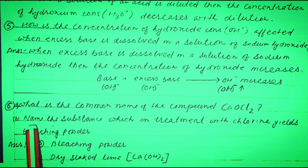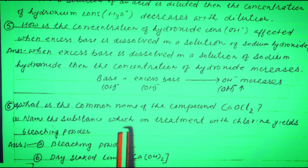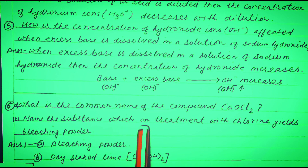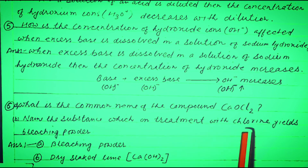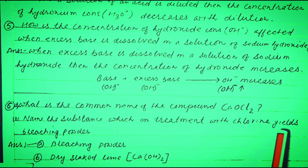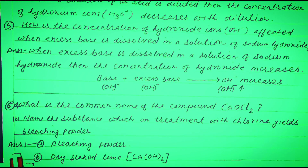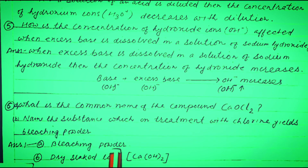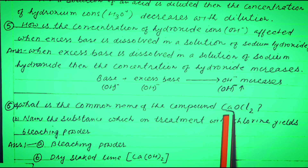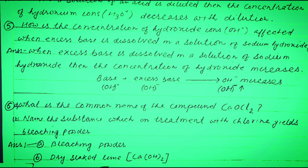Question No. 6: (A) What is the common name of the compound CaOCl₂? (B) Name the substance which on treatment with chlorine yields bleaching powder. Answer: (A) Bleaching powder is the common name of the compound CaOCl₂. (B) Dry slaked lime, Ca(OH)₂, on treatment with chlorine yields bleaching powder.